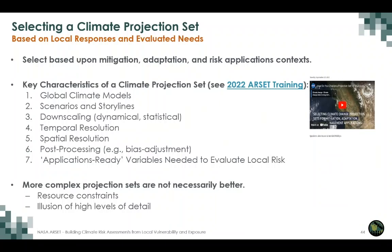Selecting a climate projection set should be based on local responses and evaluated needs given a risk application context. We call your attention to the ARSET training on Selecting Climate Change Projection Sets for Mitigation, Adaptation, and Risk Management Applications. The key characteristics to look at in a dataset include global climate models, scenarios and storylines, downscaling—whether dynamical or statistical—temporal resolution, spatial resolution, post-processing such as bias adjustment, and applications-ready variables needed to evaluate local risk. An important note: more complex projection sets are not necessarily better, even if they feature higher resolution.